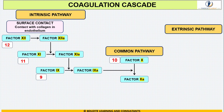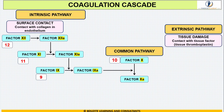Do you see a pattern? There is a decrease from number 12, then 11, then 9 — number 10 is missing because it has gone to the common pathway in the center. So the intrinsic pathway has Factors 12, 11, and 9. Coming to the extrinsic pathway: 'extrinsic' means outside, so there will be contact with something outside the blood vessel wall — a tissue contact.